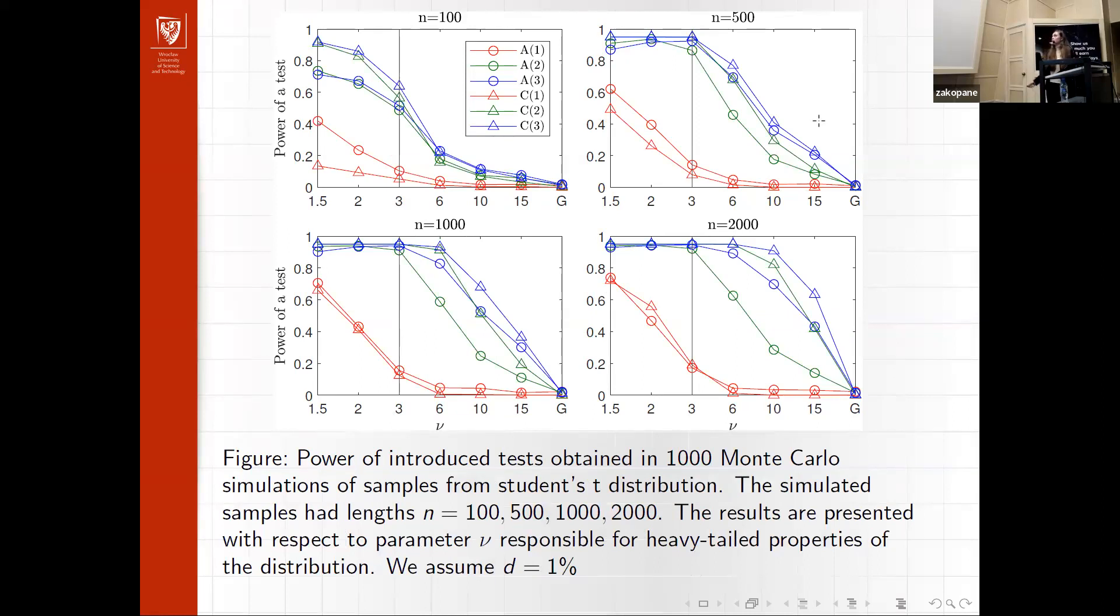In here, we have results for different sample sizes, this time for Student's t distribution. We can see that the power also decreases when we are increasing the number of degrees of freedom. However, from 3 to 15, we have a finite variance distribution, yet the test sometimes falsely rejects the null hypothesis in those cases. So for Student's t distribution, this test works a little worse than in case of stable distributions.